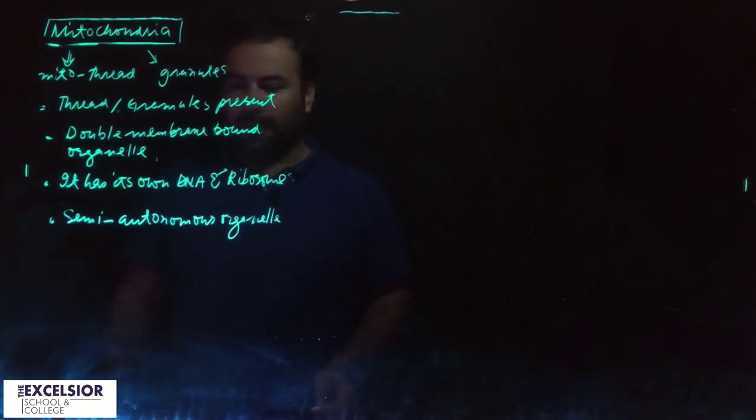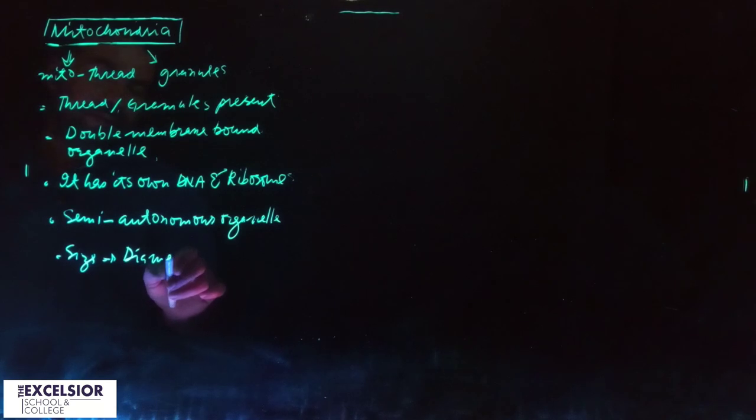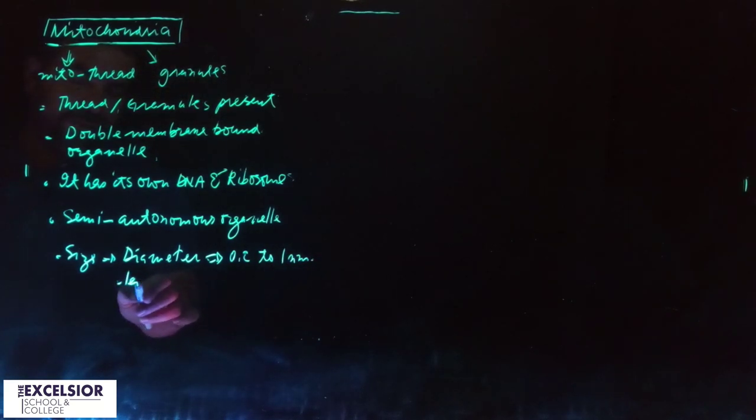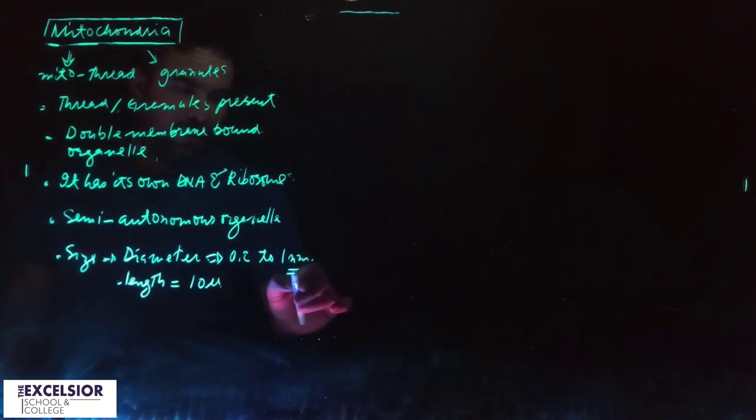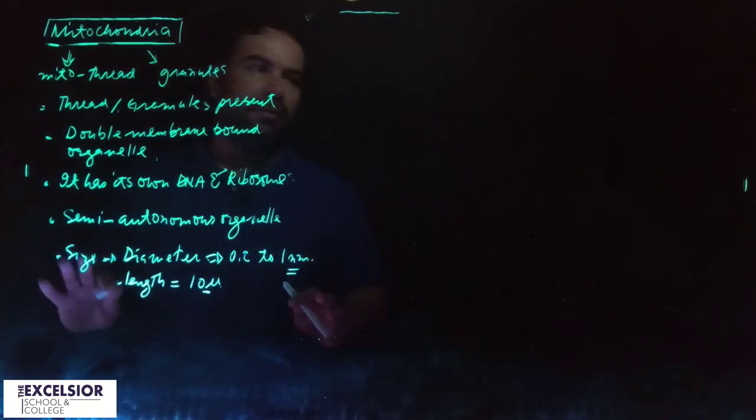Let's talk about the size. The diameter of mitochondria goes from 0.2 to 1 nanometer. The length of mitochondria may go to 10 microns. This is in nanometers and this one is in micrometers, so lengthwise it's a little bit long.